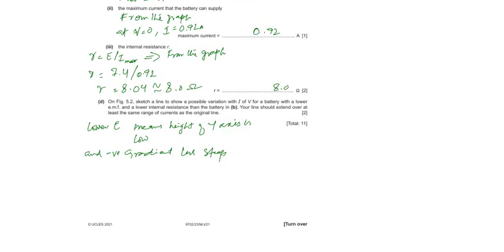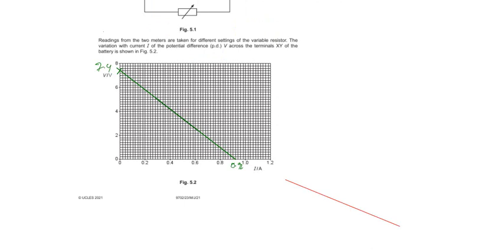What we will do is put any straight line which finishes at 0.92 amperes but below 7.4 volts, showing the less gradient, which means internal resistance is less and the emf is less. Lower emf means the height on the y-axis is low, and the negative gradient should be less steep for the lower internal resistance. Thank you.